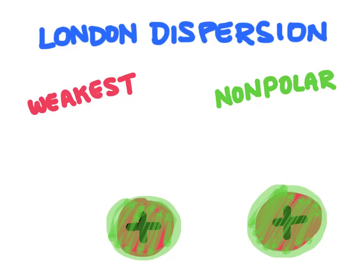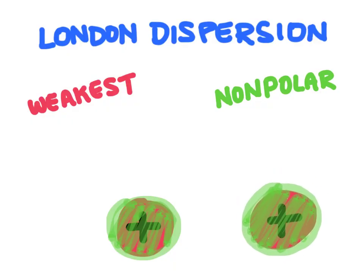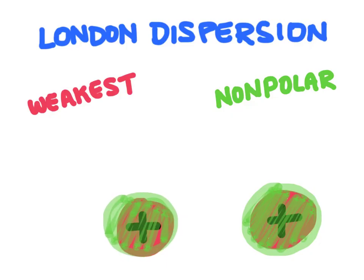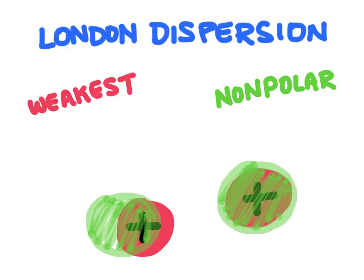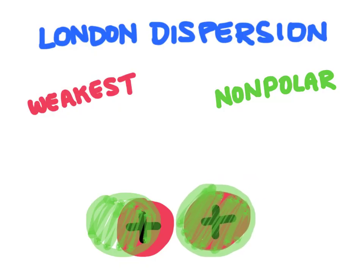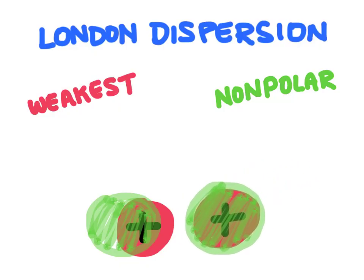The way that London dispersion forces occur is we have the electrons on a molecule that are going to briefly move to one side of the molecule and expose the positive charge just for a brief moment. The red part is the positive charge and it's masked by the green cloud of electrons. Electrons are just kind of randomly moving almost like a cloud, and briefly this cloud of electrons can move to the side a little bit. When it does, the positive charge is just slightly exposed, and if another molecule is floating around close by, for that brief moment it's going to be attracted to that positive charge.